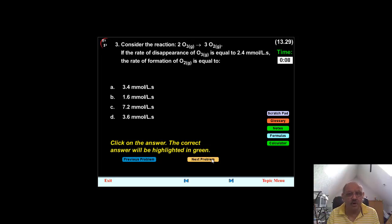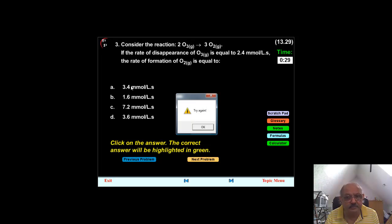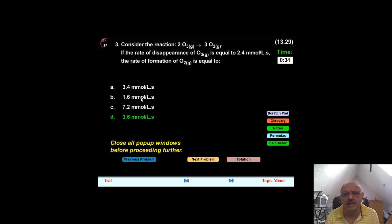So, looking at this problem, please note, we have given you a timer. We even give you a scratch pad, glossary, notes, formulas and the calculator. You have two tries to solve this problem. Try number one. It's not the right answer. Try number two. This is the right answer. Now, why is this the right answer?